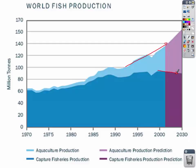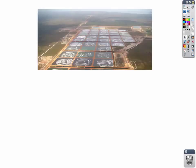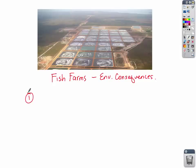Is that good? Let's take a look at fish farms and their environmental consequences. Number one: whenever you have large populations of a species in a small area, it's always susceptible to diseases.